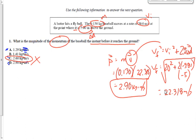Since we're only looking for the magnitude, we don't need the negative sign. The magnitude is 2.90 kg·m/s. You see how important it is to look at the big picture — look at the whole question, not just the givens.